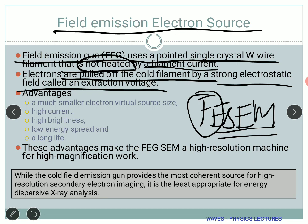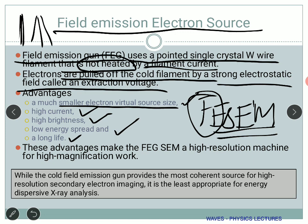The advantages of FEG are: long life, because the filament is not being heated so mechanical stress is much less; a much smaller electron virtual source size since the diameter is very small; high current and very high brightness; and less energy spread — the beam is narrow and focused rather than spread out. These advantages make the field emission scanning electron microscope a high-resolution machine for high magnification work. In current research, good journals typically expect FESEM images rather than regular SEM.